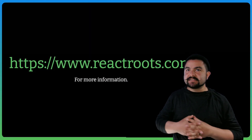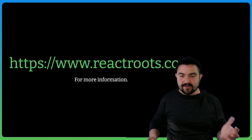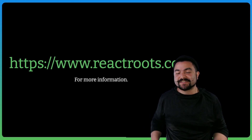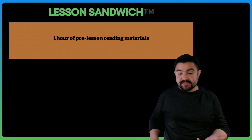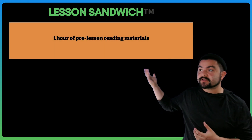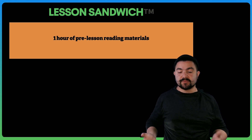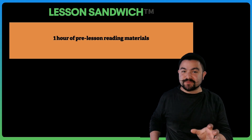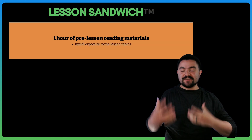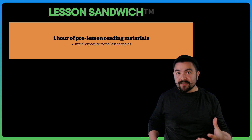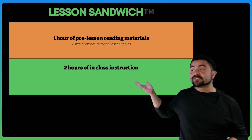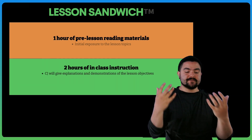Now let's talk about how this course is structured, because this is not a traditional code-along style course. Every student is going to build something different based on all of the things that they learn. I like to call this the lesson sandwich, because the first six lessons all include an hour of pre-lesson reading material. I have links to articles, blog posts, and tutorials about the things we're going to learn, and by doing this before you watch the lesson video, you're getting exposed to those topics before we learn them in the lesson itself.